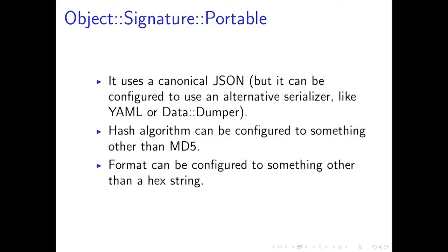Object::Signature::Portable — at least for internal use for my company, we use Canonical JSON, but the module lets you use YAML, Data::Dumper, or something else you know is consistent. You can also change the hash algorithm to something other than MD5, and there are a few other options to change the format.